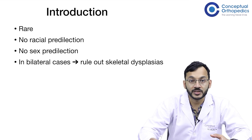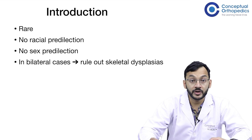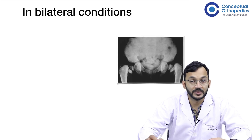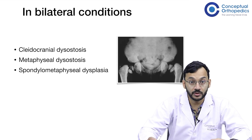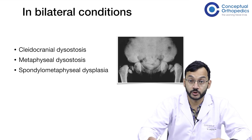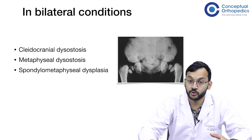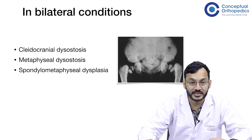Congenital coxa vera is a very rare condition. There are no racial predilections and no sex predilections. However, in bilateral cases, it is always important that we rule out skeletal dysplasias — specifically cleidocranial dysostosis, metaphyseal dysostosis, and spondylometaphyseal dysplasia. Other uncommon dysplasias can also be seen.